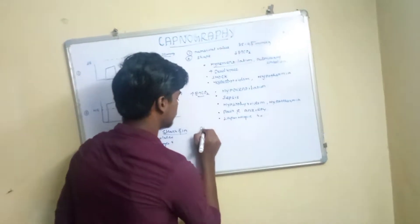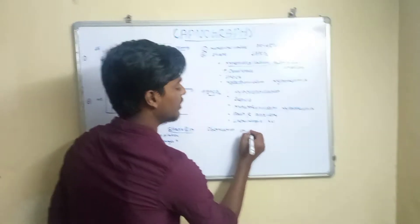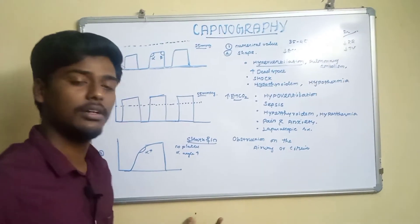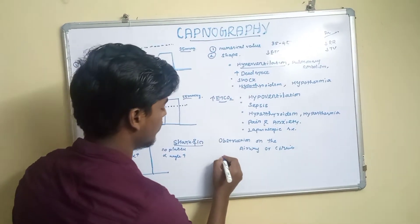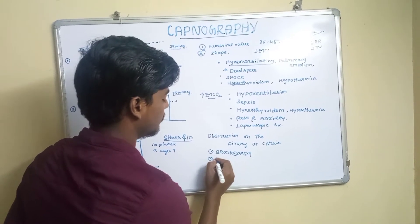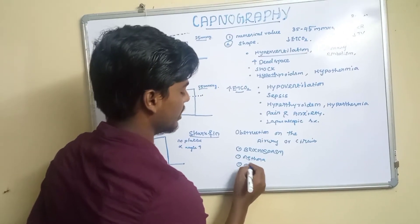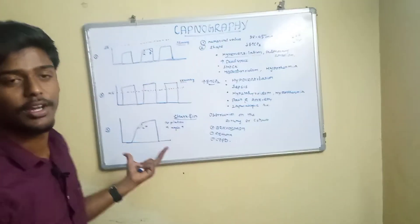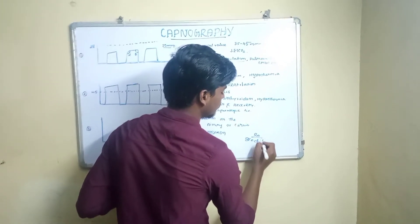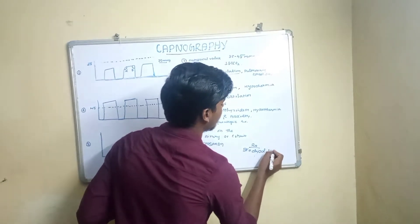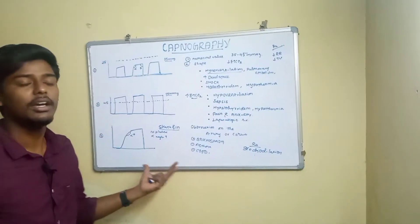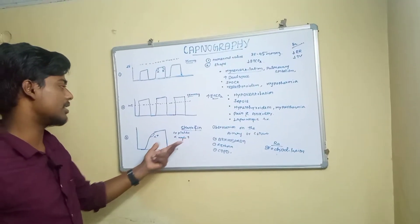The shark fin appearance represents obstruction — obstruction of the airway or circuit. If there is airway obstruction, this shark fin appearance is seen. What causes bronchospasm? Asthma and COPD. In these conditions, the shark fin appearance is seen on the capnograph. The treatment is a bronchodilator — alpha-2 agonist, methylxanthines, and derivatives. If you use bronchodilators, you can treat this and the shark fin appearance resolves.